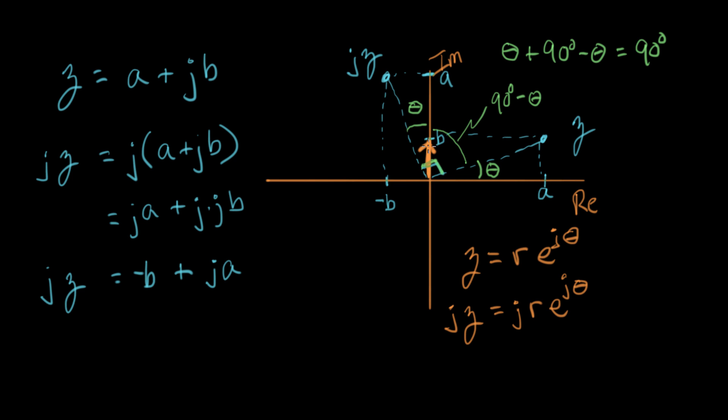The vector j is right there, and it has a magnitude of one, and it points straight up on the imaginary axis. So I can represent j like this. I can say j is e to the j 90 degrees. That's equivalent to this j here, and it's multiplied by r e to the j theta. And now the last step is we just combine these two exponents together, and we get jz equals r times e to the j theta plus 90 degrees.